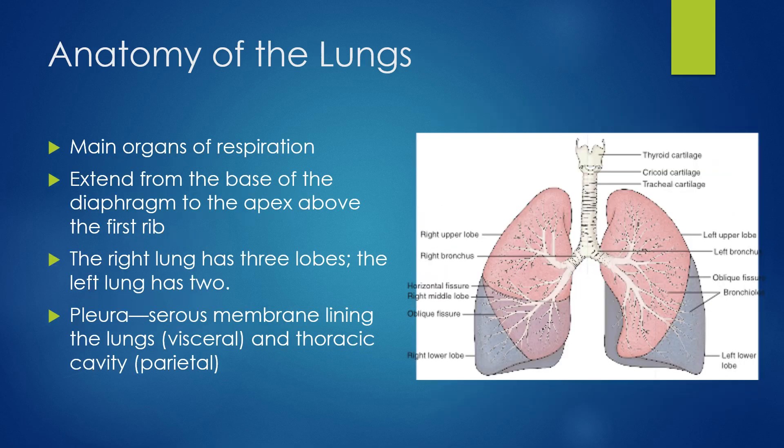The lungs are the main organs of respiration. The lungs are a stretchy organ that stretch and compress with each breath, kind of like a balloon. Humans have two lungs, a right and a left. The right lung has three lobes: the upper, middle, and lower lobe. The left lung has two lobes: the upper and the lower. The area where that middle lobe would be on the left-hand side is being taken up by the heart.